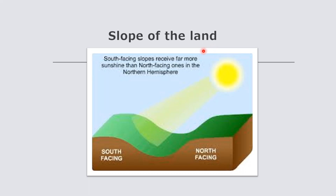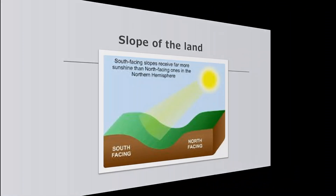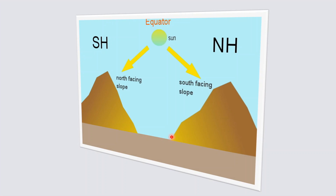The slope of the land also plays a very important and significant role in determining the temperature of an area. In the northern hemisphere, south-facing slopes are warmer than north-facing slopes because the sun's rays strike south-facing slopes at a steeper angle. This happens when mountains are aligned in an east-west direction. For example, the great Himalayas, which lie in an east-west alignment, have their southern slopes more exposed to the sun while their northern slopes are less exposed.